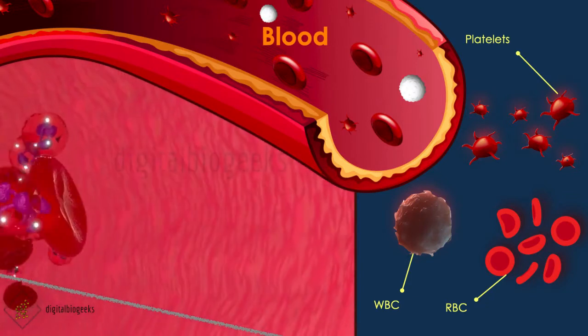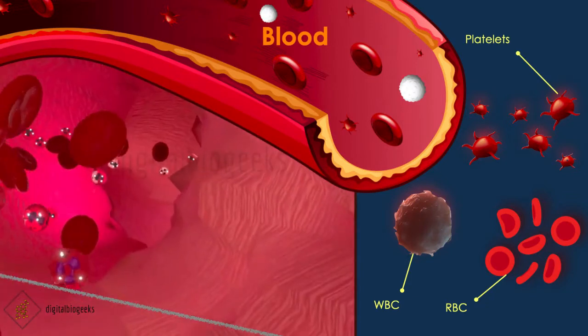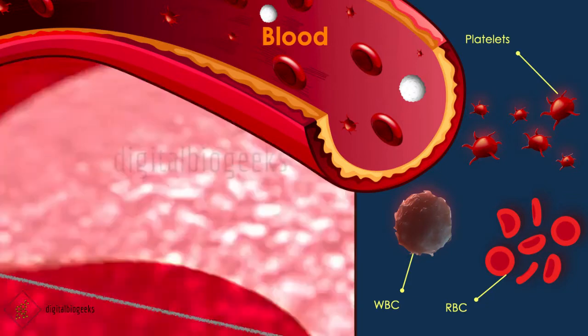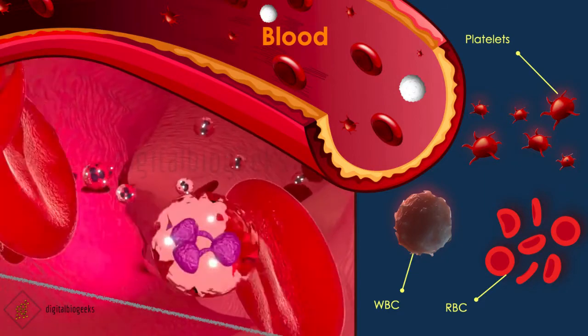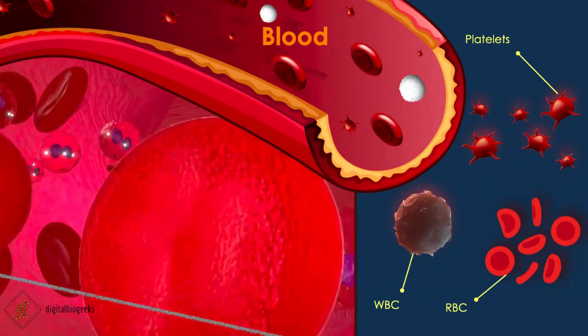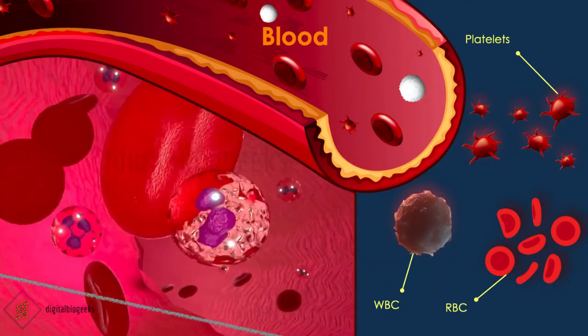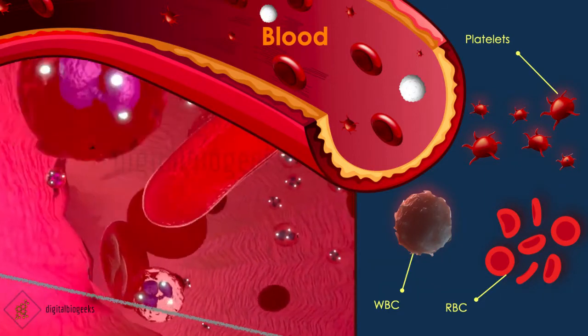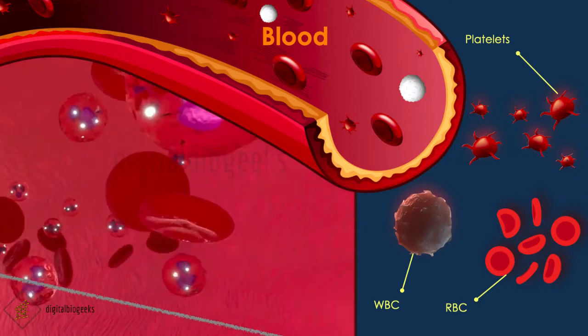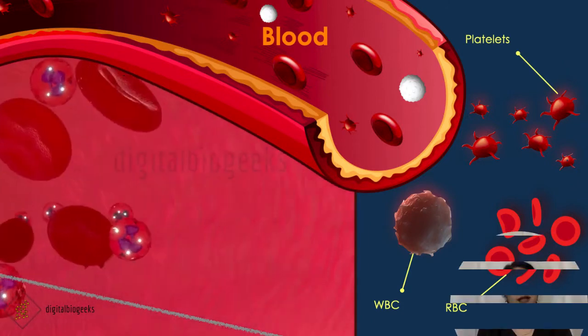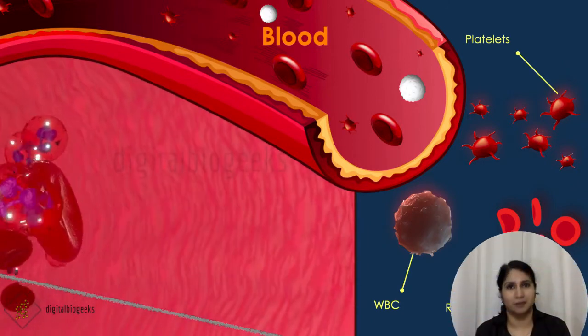The clear fluid in the blood is known as plasma. We get plasma by eliminating all the RBCs, WBCs, platelets, and other cellular components.